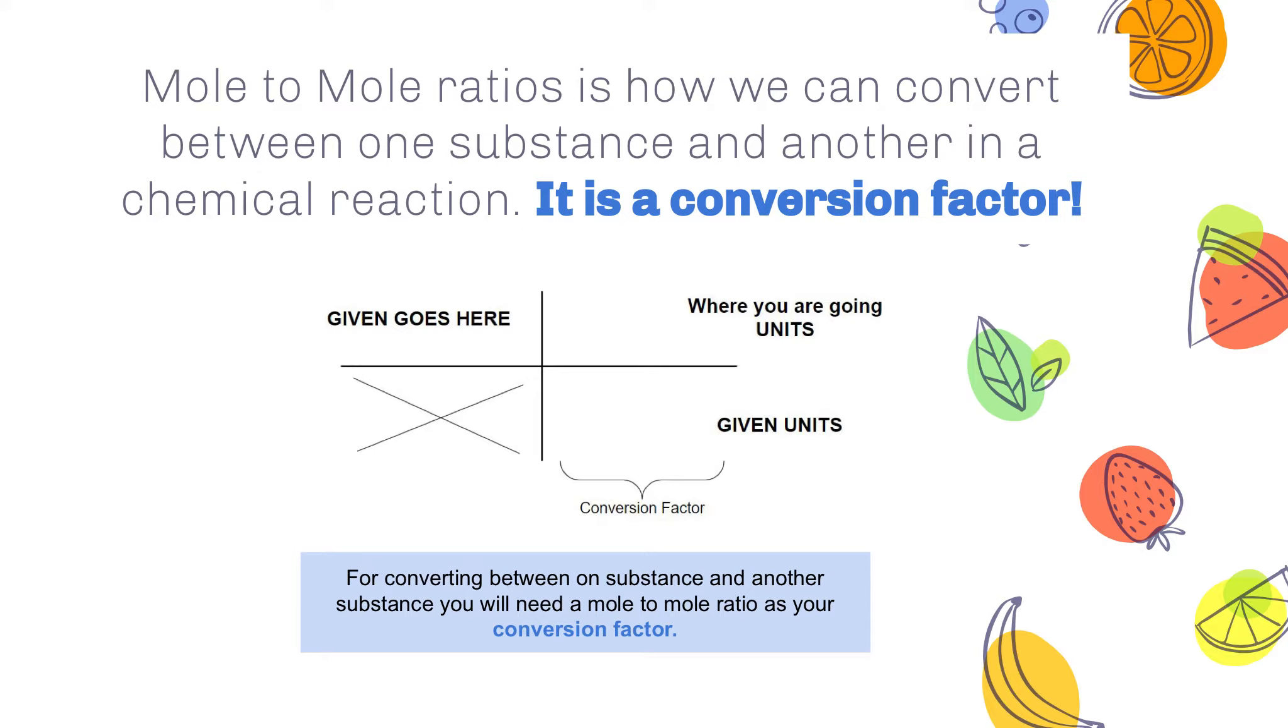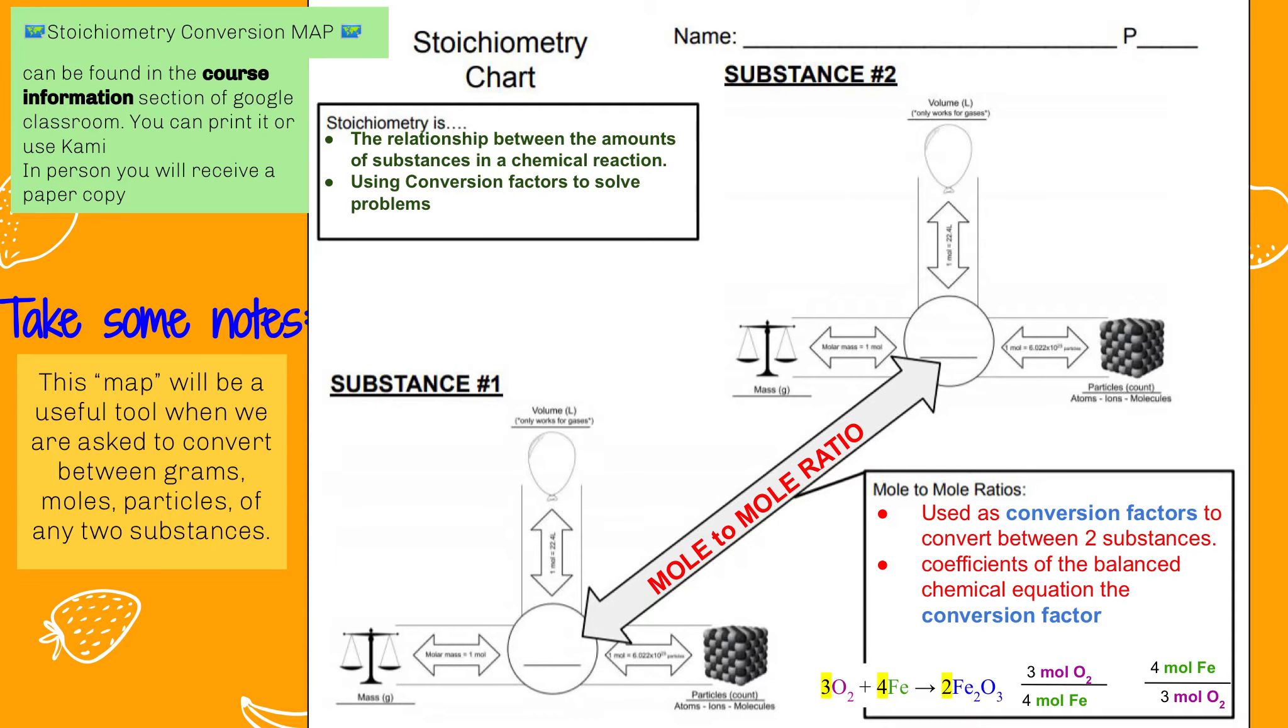You can only go from moles of one substance to moles of another. You can't go directly from grams of one substance to grams of another without first using your mole ratio. So this is a conversion factor map that you can use. There are copies in either Google Classroom and in the Google website to fill in if this will help you understand the different relationships between all of the different conversions we are going to be doing in this unit.